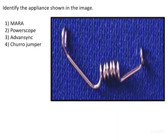In this question we have been asked to identify the appliance shown in the image. What we see here is a wire component which consists of two loops — one in the posterior and one in the anterior — and there is a coil.